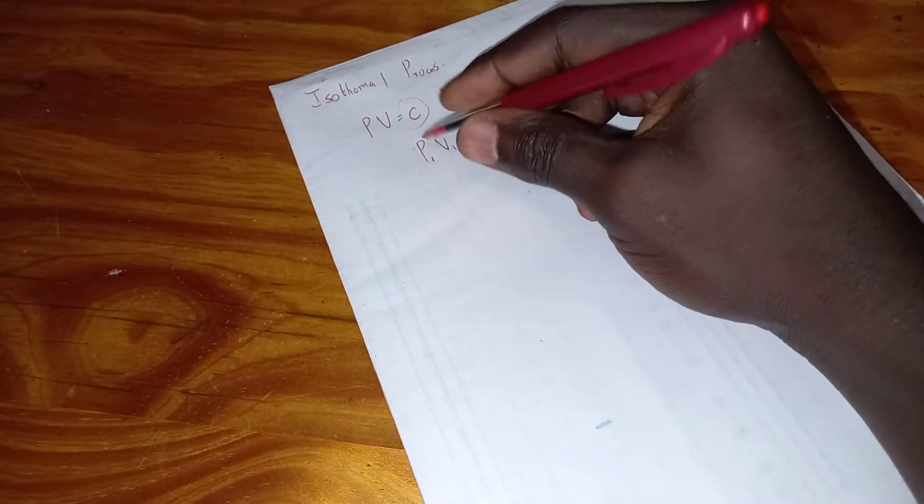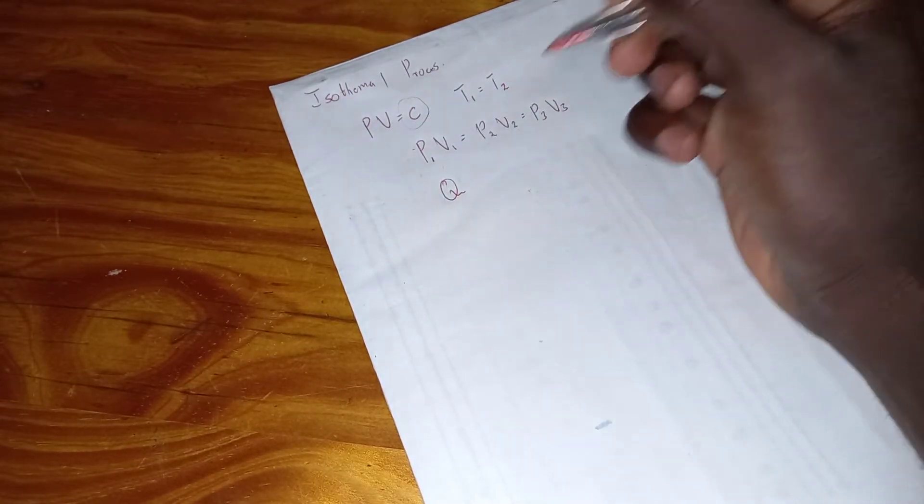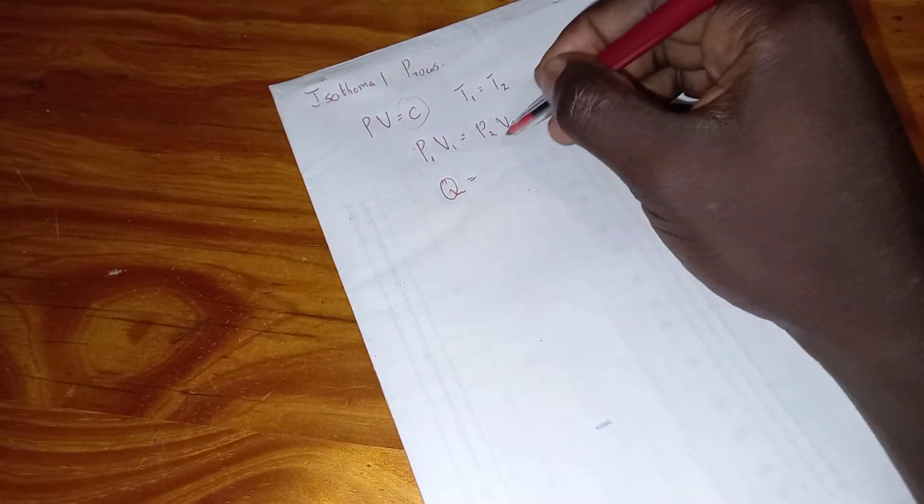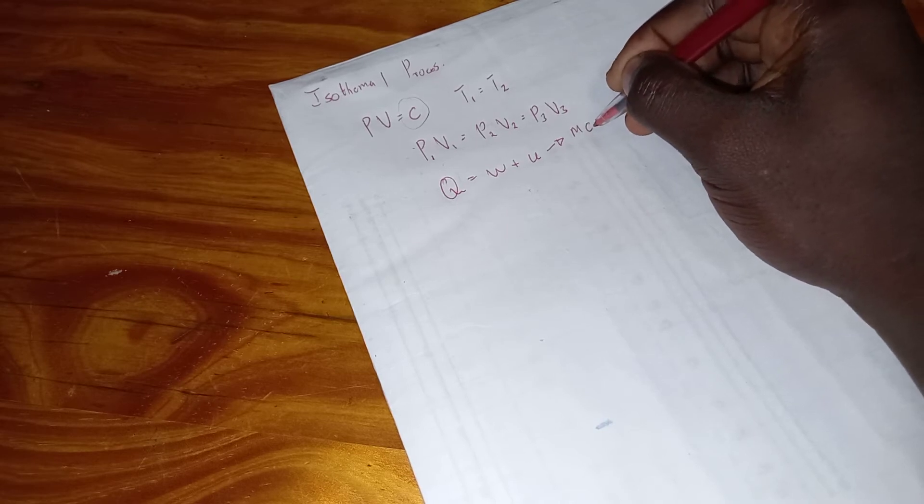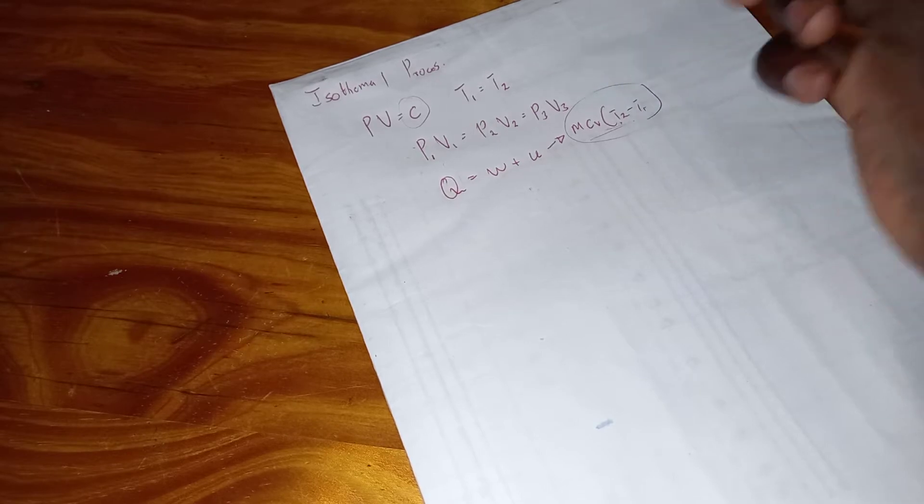When calculating heat energy, you say heat energy equals work done plus the internal heat energy. We know that internal heat energy equals mass times Cv times (T2 minus T1). In the isothermal case, you don't have a change in internal heat energy because the temperatures are the same — the final and initial are equal. Therefore, Q equals W.